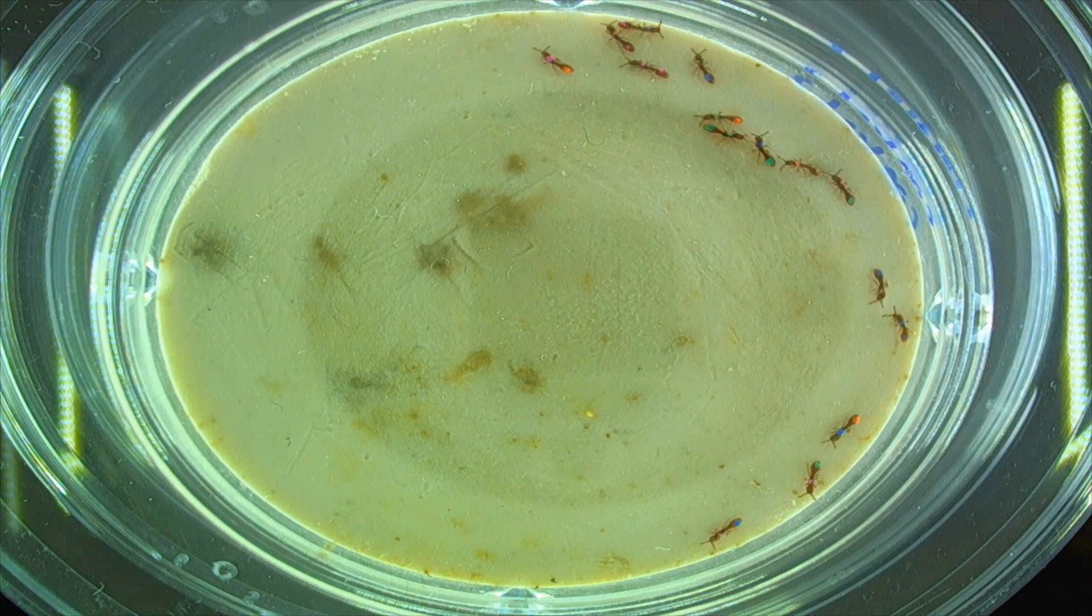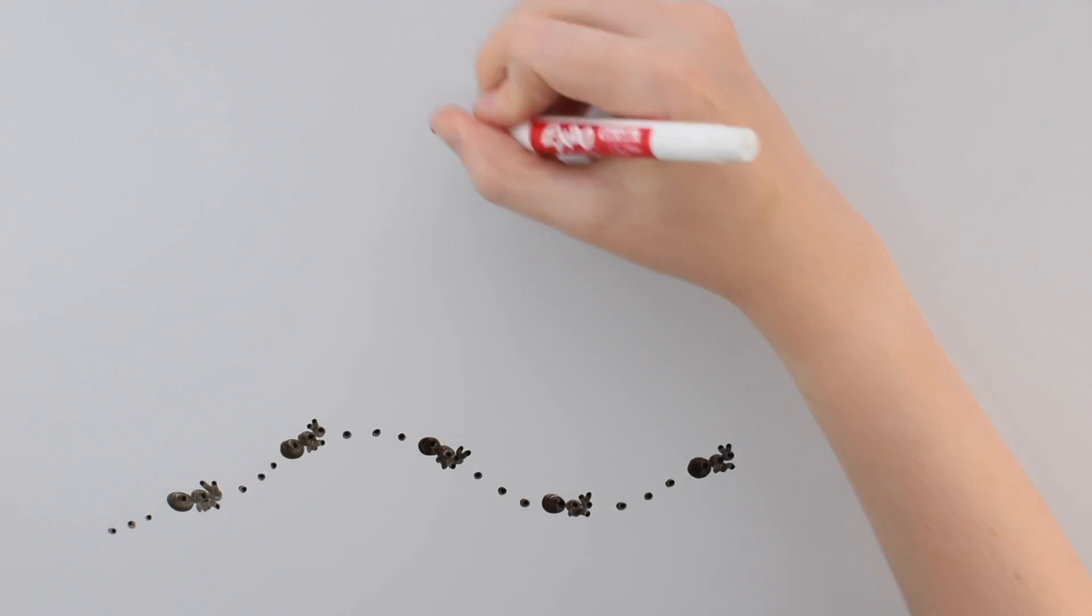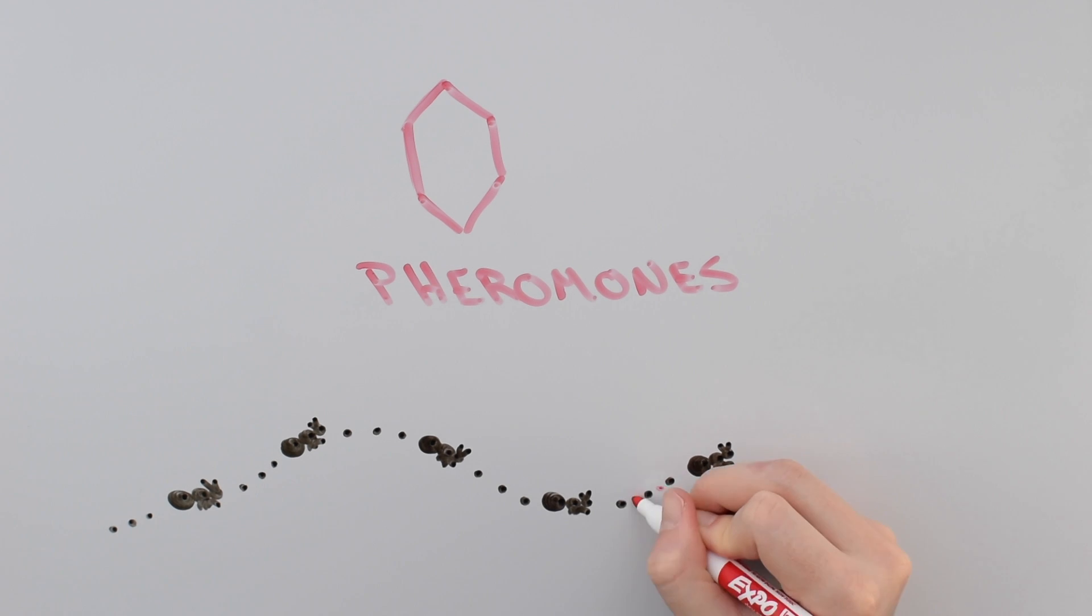Have you ever seen ants walking in a line and wondered how they do it? Scientists have known for a long time that ants use secreted chemicals called pheromones to communicate complicated social signals, including which trails to walk on.